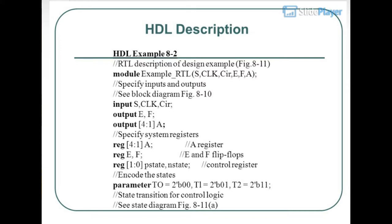HDL description of the design example (Figure 8-11): Module Example with inputs/outputs S, CLK, E, F, A. System registers include a 4-bit register A, flip-flops E and F, and a 1-bit control register (State, NState). State encoding uses parameters: BOOT=2'b00, L=2'b01, T1=2'b10, T2=2'b11. State transition logic for the control is described corresponding to the state diagram of Figure 8-11.